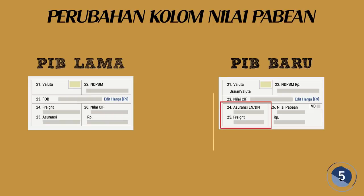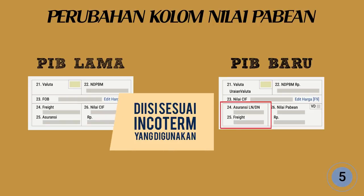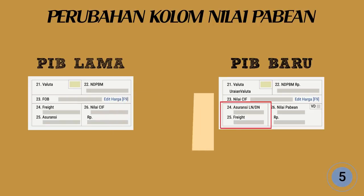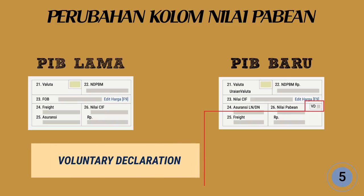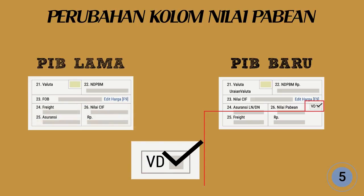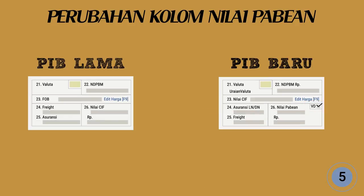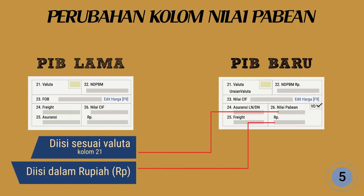Perubahan kolom nilai pabean: diisi pada kolom yang disediakan dengan incoterm yang digunakan dan nilai barang dalam mata uang sesuai kolom 21 yang tercantum dari invoice. Dalam hal terdapat nilai yang seharusnya dimasukkan dalam nilai barang impor namun pada saat impor belum dapat ditentukan nilainya, dan importir melakukan voluntary declaration sesuai peraturan perundang-undangan mengenai nilai pabean, importir mencantumkan keterangan VD pada kolom yang disediakan. Diisi dengan nilai pabean barang impor dengan incoterm CIF dalam valuta sesuai kolom 21 dan rupiah.